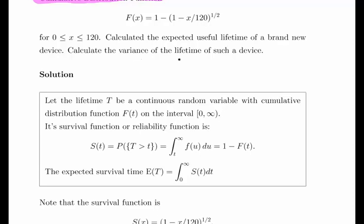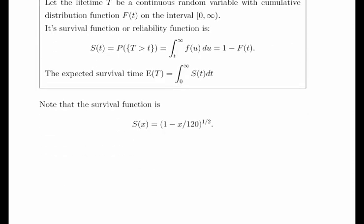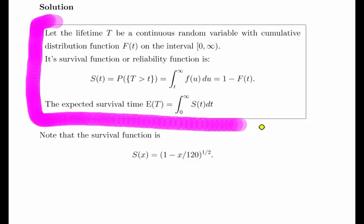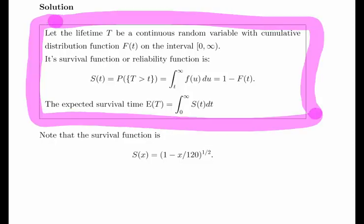Here's the theory - this is essentially revision of lecture notes. Let the lifetime T be a continuous random variable with cumulative distribution function F(t) on the interval 0 to infinity. Note that we are going to change that to 0 to 120.